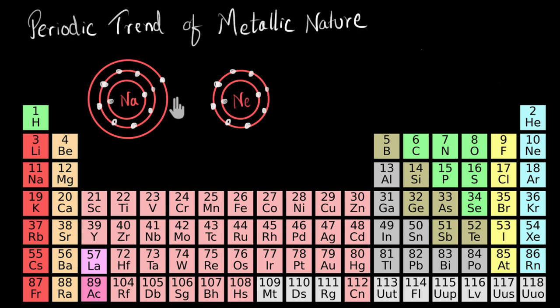Whereas if there is another element that requires some effort to give away its outermost electron, it's going to be less metallic in nature. So that's the trend we are looking for. But before we begin, let's try to find out what makes it easy or hard to give away this outermost electron.